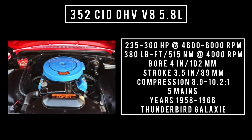Also introduced in 1958 as part of the Interceptor line of V8 engines and as a replacement for the Lincoln Y-block: the 352 cubic inch displacement overhead valve V8, 5.8 liters. It's good for anywhere between 235 up to 360 horsepower at 4,600 to 6,000 RPM, up to 380 pound-feet or 515 newton meters at 4,000 RPM, with a bore of 4 inches and a stroke of 3.5 inches. Compression was anywhere between 8.9 to 10.2 to 1. Five main bearings. Used from 1958 through 1966, it was a staple for Ford — found in the Thunderbird and the Galaxy. The high-output version came in 1960 in the Galaxy at 360 horsepower.